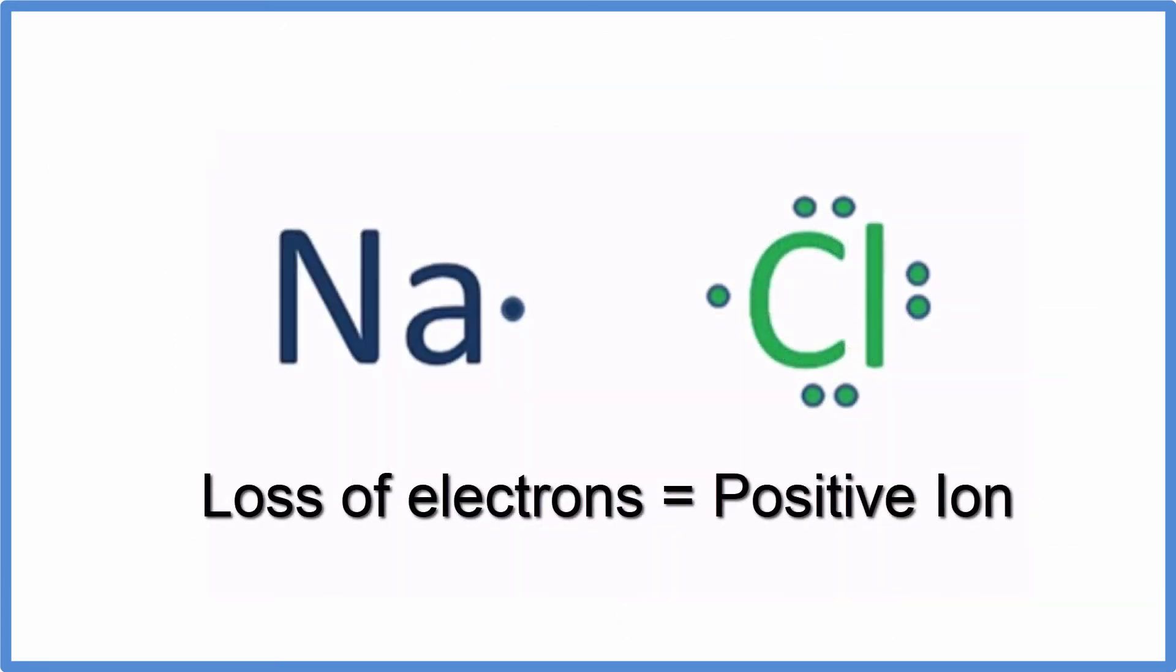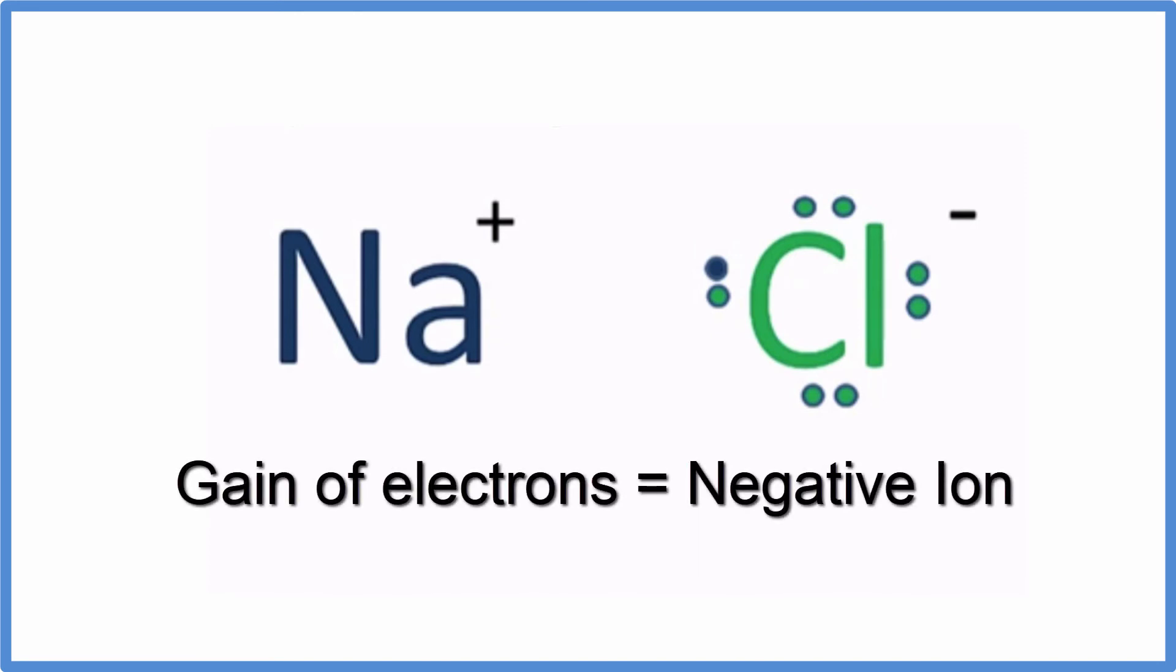It's important to understand that when an atom loses an electron, it becomes positive. The atom that receives that electron gets the negative charge and becomes a negative ion.